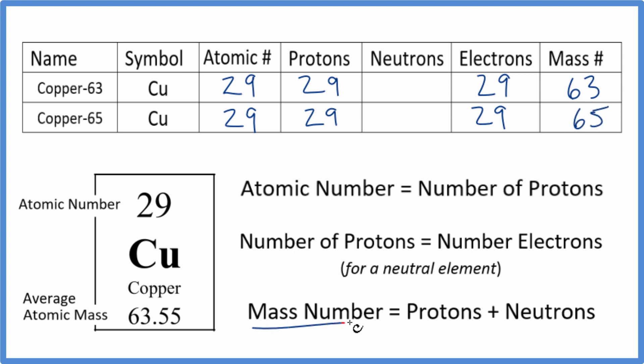The mass number equals the protons plus the neutrons. So 29 plus something gives us 63. 29 plus 34, that would give us 63.